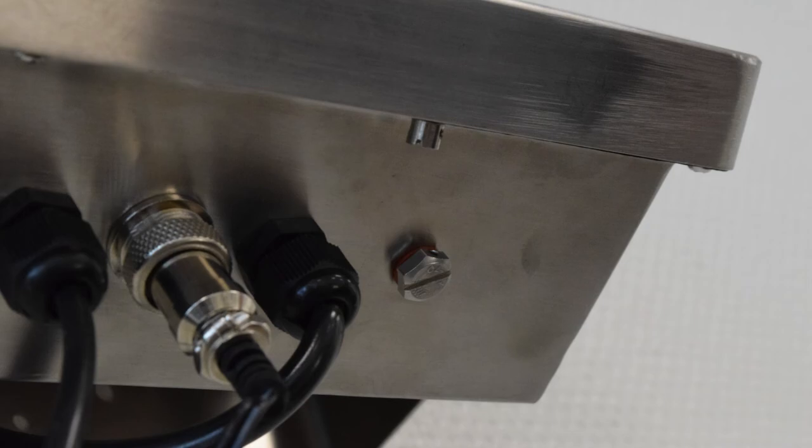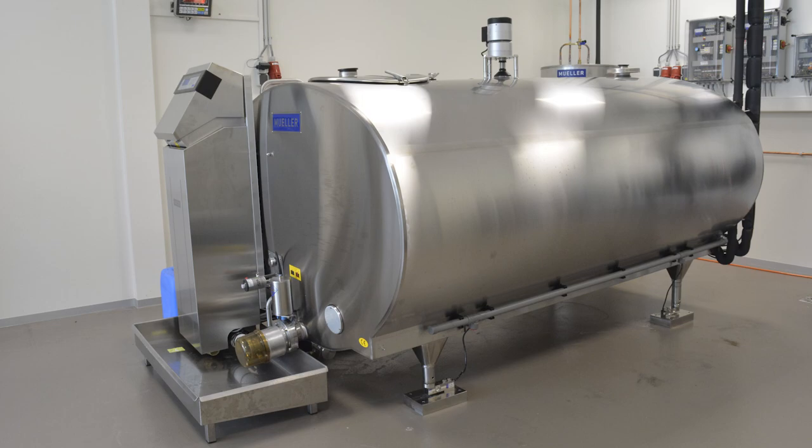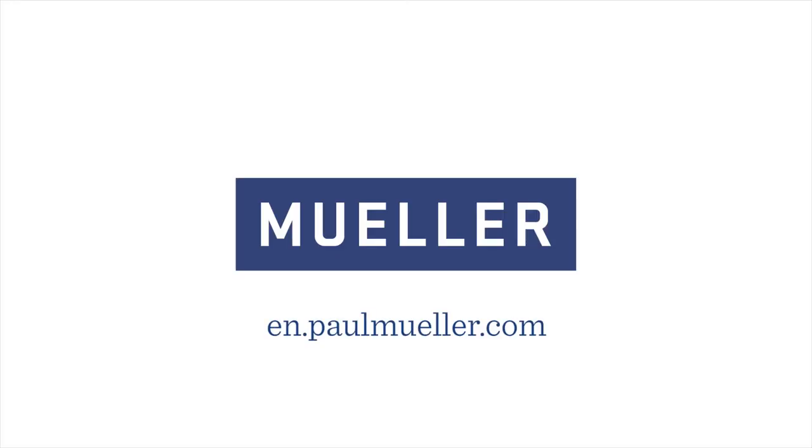Put the screw back on to close the hidden button. We advise that you seal this by using a sealing wire. Now you have successfully installed the load cells. Thanks for watching this instruction video from Mueller. For extra support, contact your local Mueller partner.